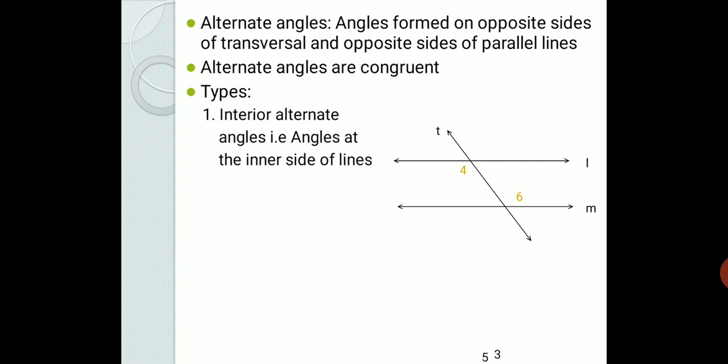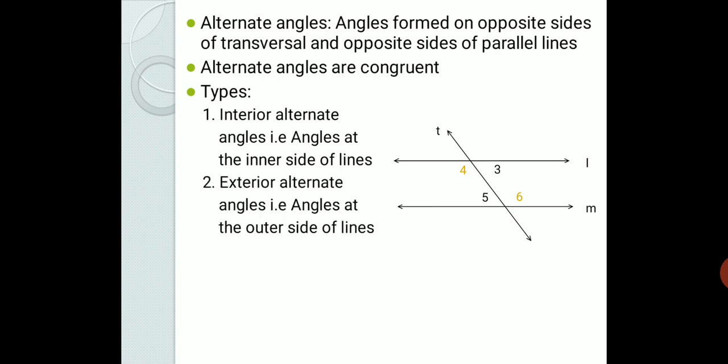There is one more pair of interior alternate angles: angle 3 and angle 5. Similarly, there is another type called exterior alternate angles — angles at the outer sides of the lines. Angle 1 and angle 7 are both on different sides of the transversal, and angle 1 is in the exterior region of the parallel lines; similarly, angle 7 is also in the exterior region. So these two angles are called exterior alternate angles and are also congruent. There is one more pair: angle 2 and angle 8.